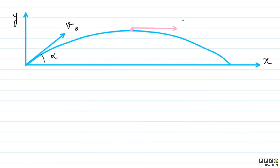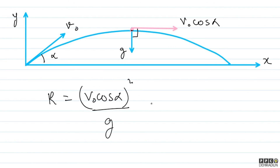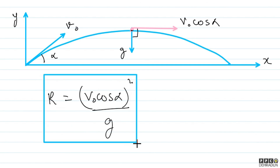At the topmost point, the velocity is only V0 cos α because the y-component of velocity vanishes. The acceleration at this point is g downward, and this time the full acceleration is perpendicular to the velocity vector. So radius = (V0 cos α)² / g. This is our final answer. We solved all parts of this question comfortably. If you have any doubts, feel free to contact me — I'll be very happy to help. Take care, bye-bye.